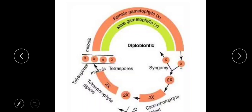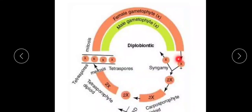In this life cycle, the plant body is the haploid and multicellular gametophyte. We have both male and female gametophytes, which produce haploid gametes by gametogenic mitosis. Both male and female gametophytes are independent multicellular structures. They produce their respective gametes, which then fuse — fertilization occurs — and forms the diploid zygote.